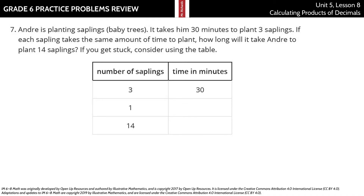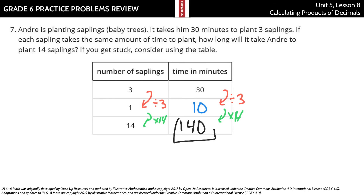Andre is planting saplings — baby trees. It takes him 30 minutes to plant 3 saplings. If each sapling takes the same amount of time, how long will it take to plant 14 saplings? Using a table: 3 divided by 3 is 1, so 30 divided by 3 is 10 minutes per sapling. Fourteen saplings times 10 minutes gives 140 minutes. And that is it for this Grade 6 Practice Problems Review on Unit 5, Lesson 8: Calculating Products of Decimals. Good luck!